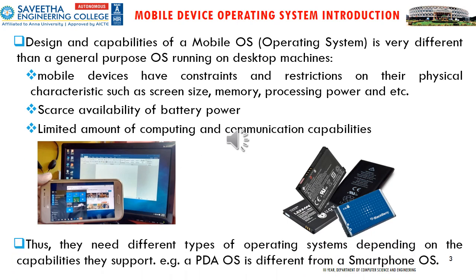There is scarce availability of battery power — mobile phones have limitations in battery capacity of up to 6000 mAh, whereas normal computers use direct current. There is also a limited amount of computing and communication capabilities. Thus, mobile devices need different types of operating systems depending on the capabilities they support.